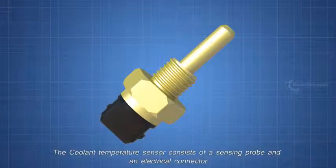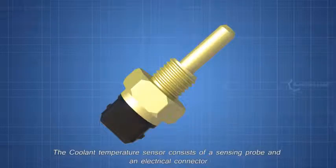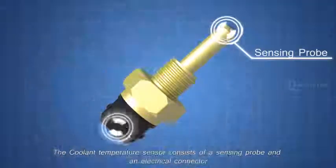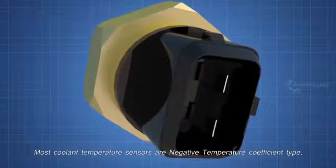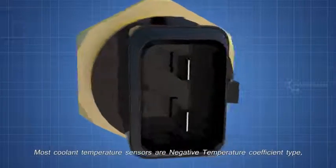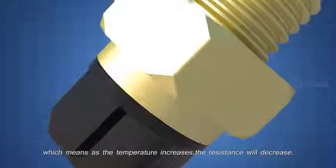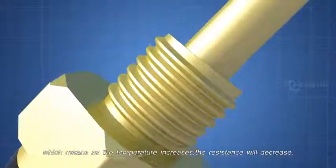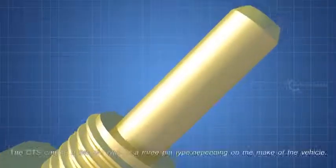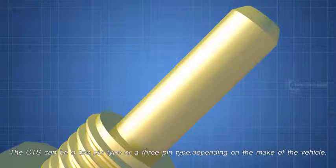The coolant temperature sensor consists of a sensing probe and an electrical connector. Most coolant temperature sensors are negative temperature coefficient type, which means as the temperature increases, the resistance will decrease. The CTS can be a 2 pin type or a 3 pin type, depending on the make of the vehicle.